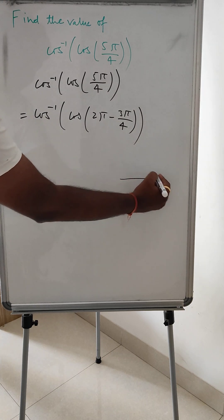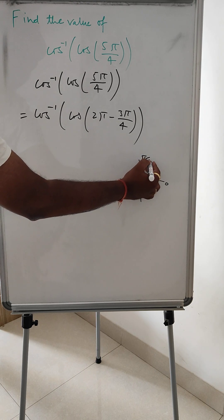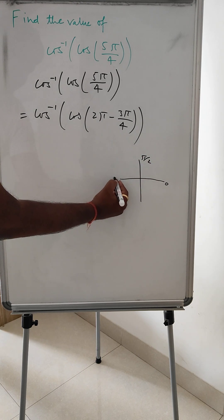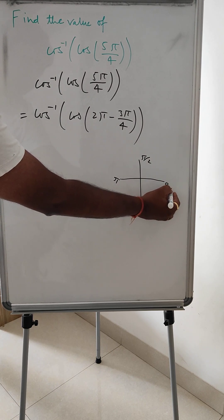So this value lies... Here this is 0, this is π/2, this is π, this is 3π/2, and this is again 2π.